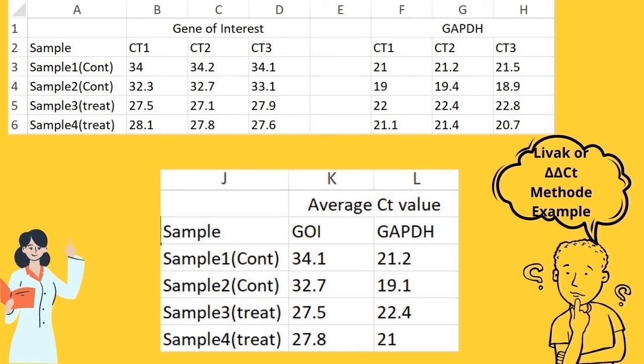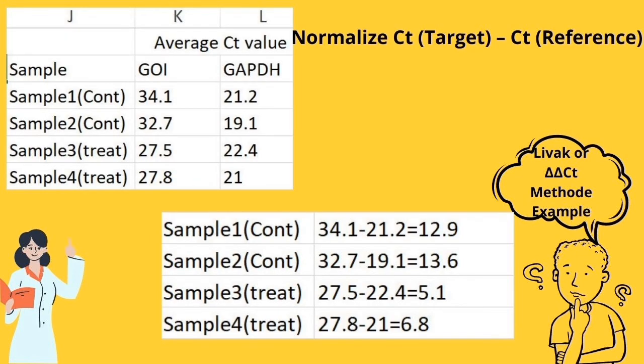As I mentioned, I performed three repeats. So let's first average these CT values for gene of interest and GAPDH. Now let's calculate delta CT with this equation: gene of interest CT value minus GAPDH CT value would be our delta CT.